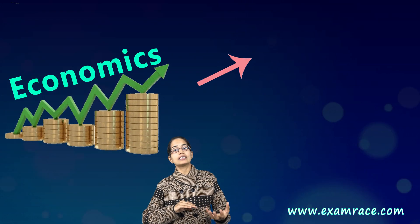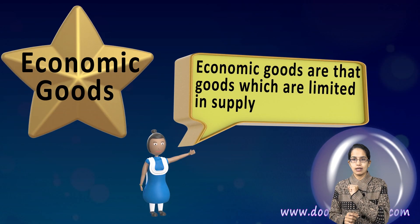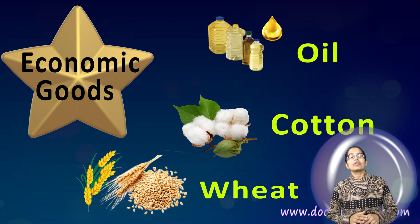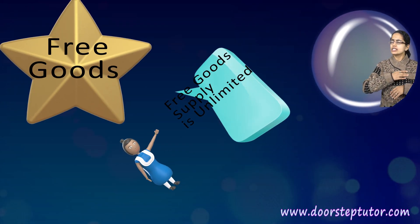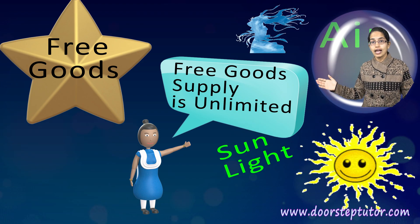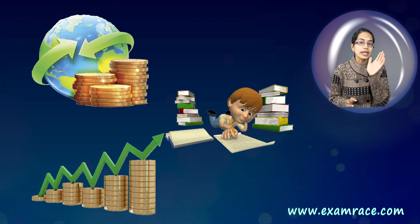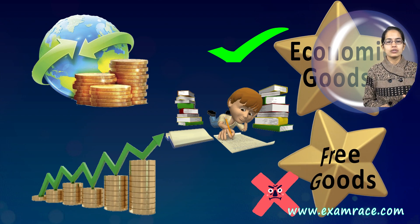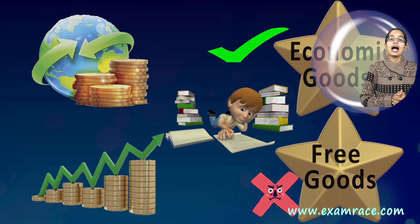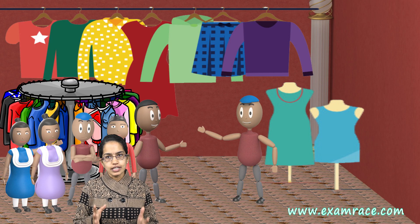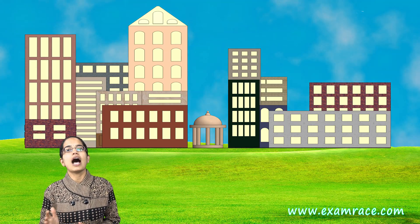Economics works with either economic goods or free goods. Economic goods are those which are limited in supply — for example, oil, cotton, and wheat. On the other hand, free goods are unlimited — for example, air and sunlight. Our main concern in economics is to focus on economic goods, not free goods. There are also role players in economics called economic agents, which are either individuals, private firms and entities, or the government.